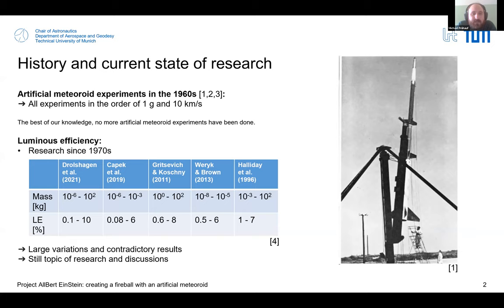Let's have a quick look at the history. There have been artificial meteoroid experiments in the 1960s already. You see a picture on the right side of one of the rockets. In all of those experiments, the meteoroids had masses in the order of about a gram and re-entry velocities of roughly 10 kilometers per second. Research on luminous efficiency has been ongoing for quite a long time.